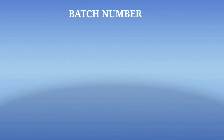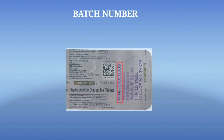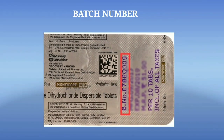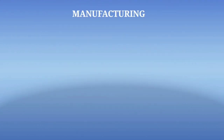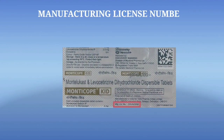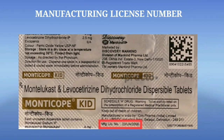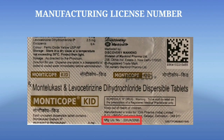The next one is batch number. A distinctive batch number is printed on the label of a drug that identifies the batch and permits the production history — including all stages of manufacture and control — to be traced and reviewed. The next one is manufacturing license number. It is labeled on a drug and is mandatory for all drug products. For any medication to be marketed, they need a manufacturing license number to sell.